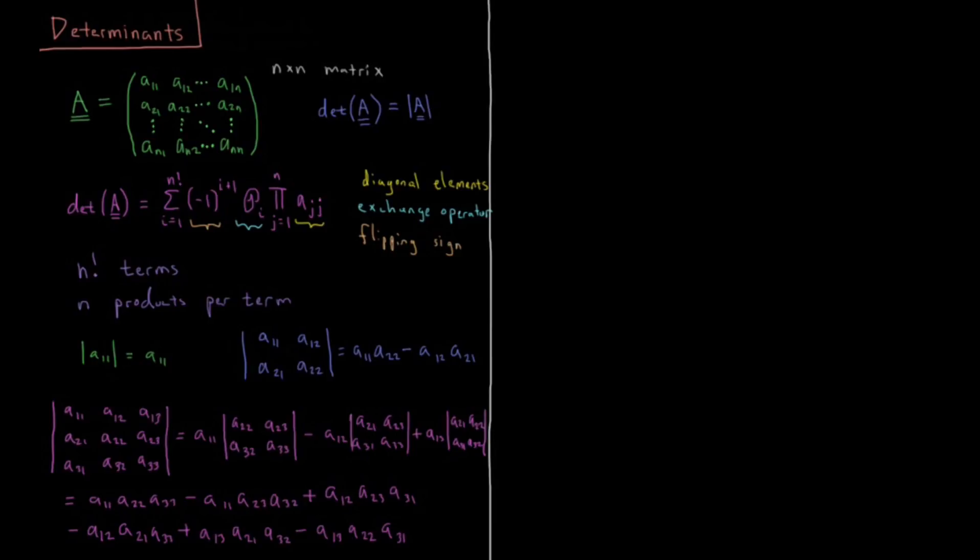This video is an introduction to the determinant of a matrix. In this case we're going to limit ourselves to the case of an n by n matrix. The number of columns and the number of rows are equal, as I have indicated here by the various elements that we have.